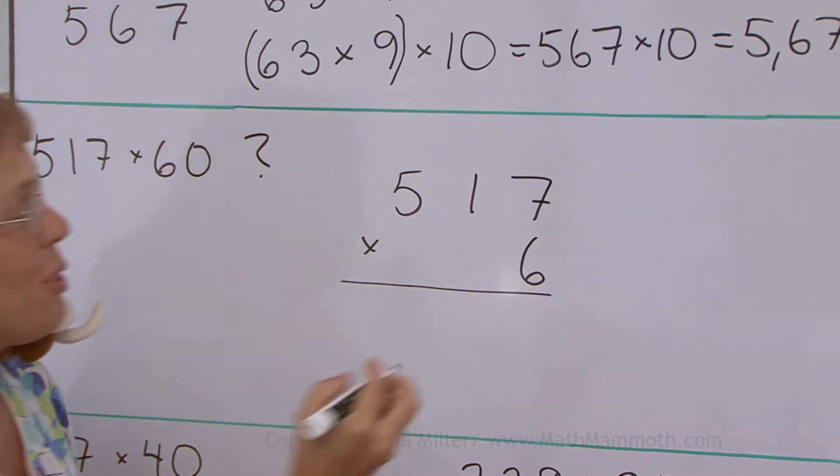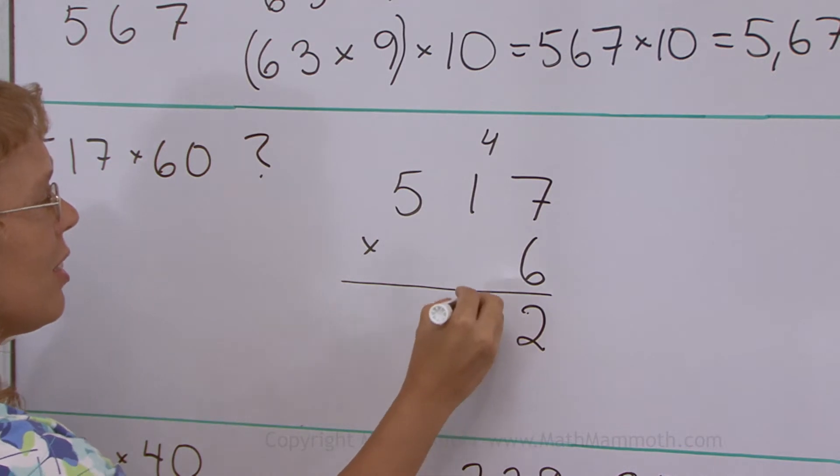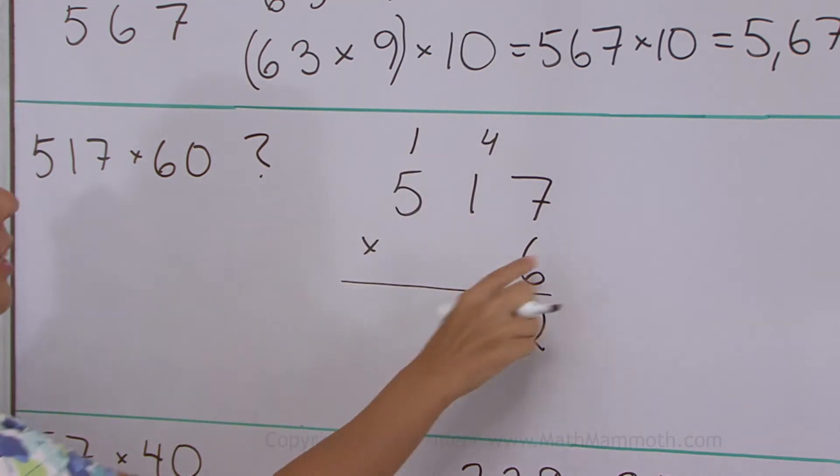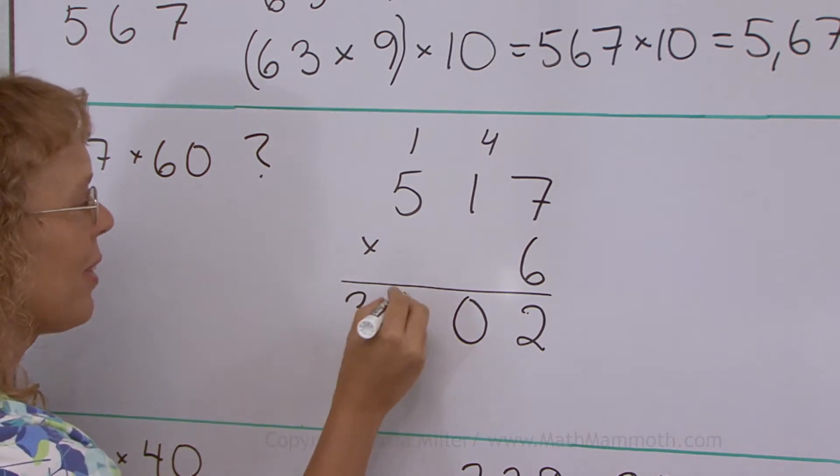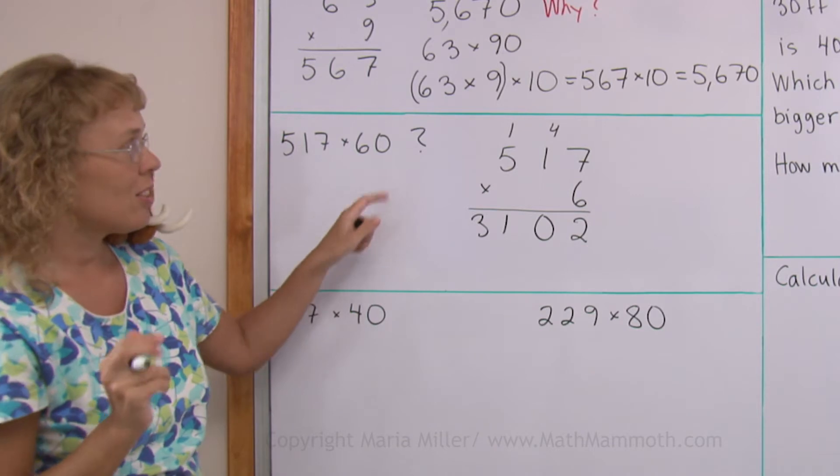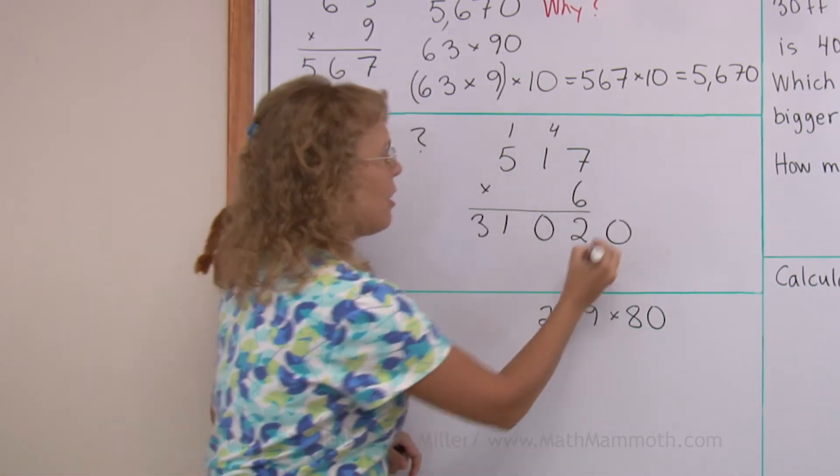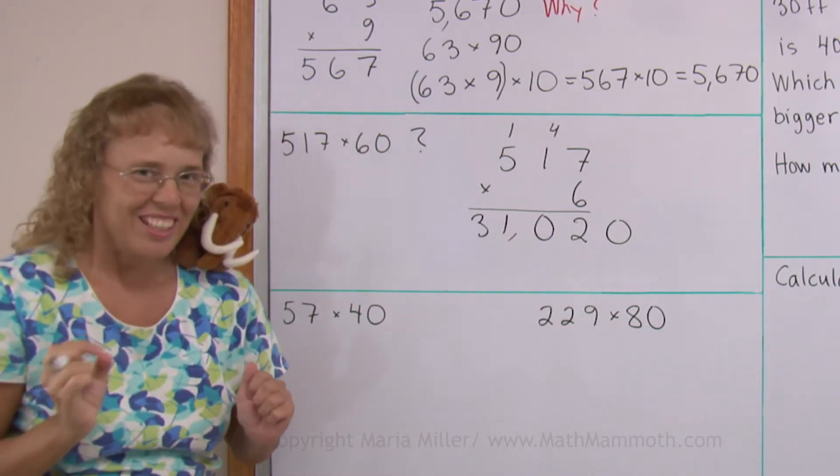6 times 7, you tell me 42. Then 6 times 1 plus 4 is 10. So zero here and regroup that. 6 times 5 plus 1, 31. So our original problem will have the answer of the same thing with a zero there. 31,020. Easy, right?